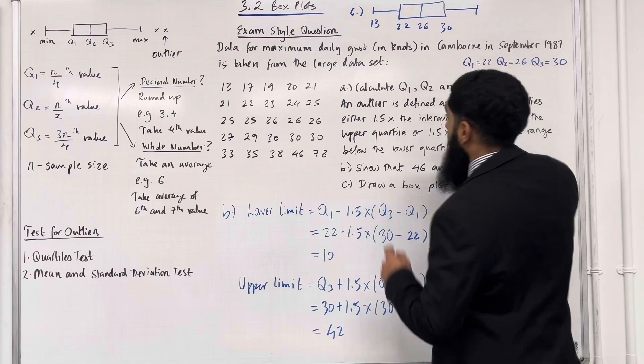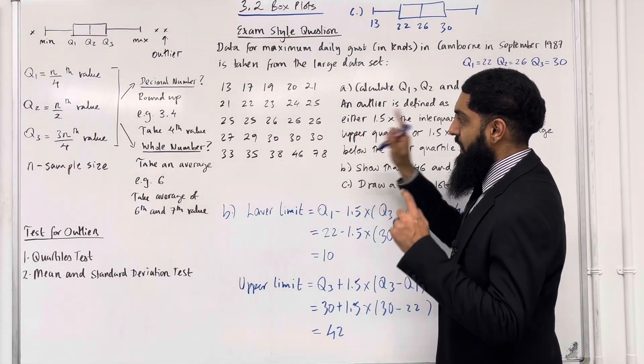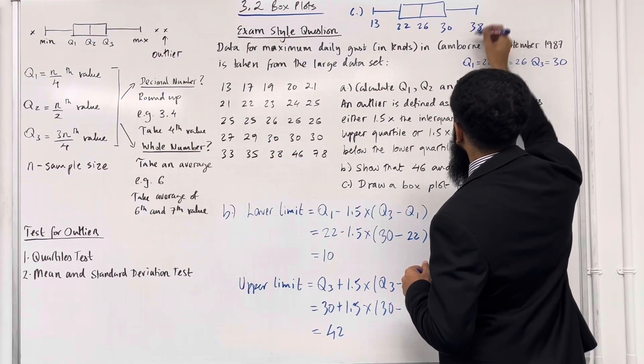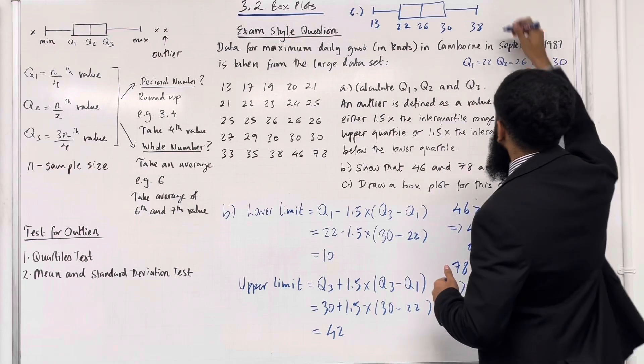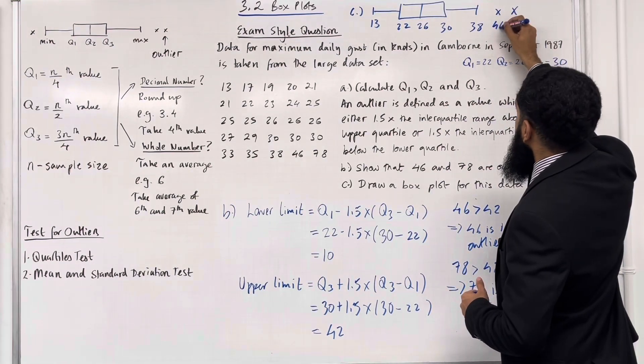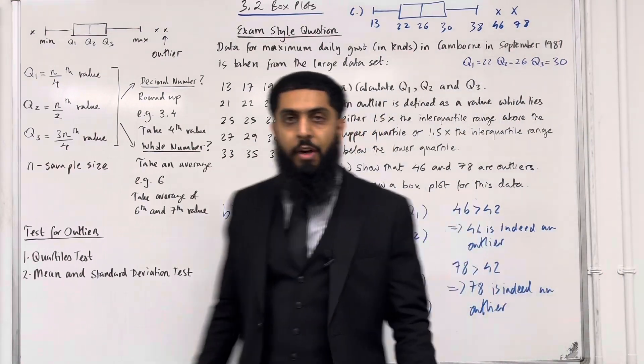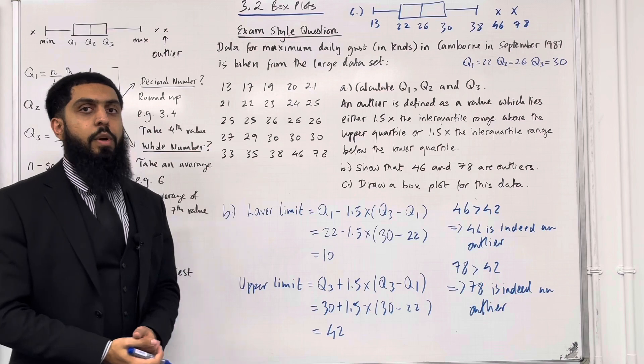Now with the maximum value, we must be careful. 78 is an outlier, 46 is an outlier, so the maximum is labeled as 38. The 46 and 78 are represented with X's as outliers. That completes part C of this exam style question and this teaching video 3.2 box plots.